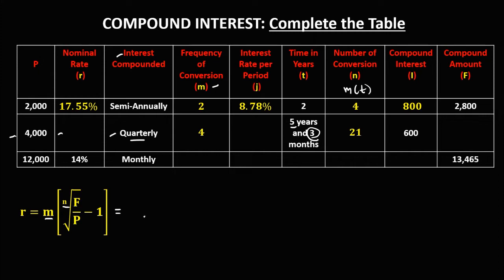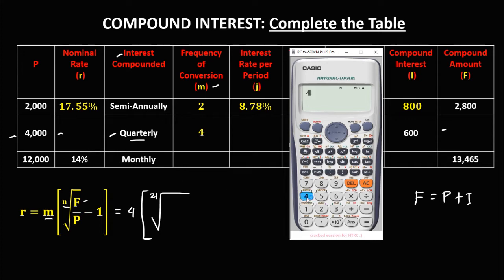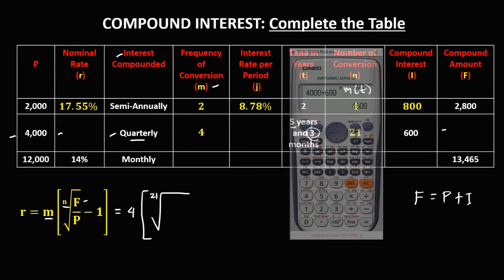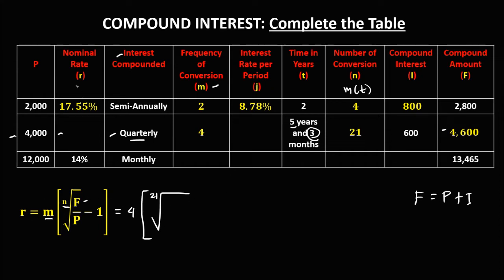To solve for the nominal rate, we have M equals 4 times the 21st root. Since F is unknown, we first find the compound amount: compound amount equals principal plus interest, so 4,000 plus 600 equals 4,600. Now for the nominal rate: the 21st root of 4,600 over the principal 4,000, then minus 1.